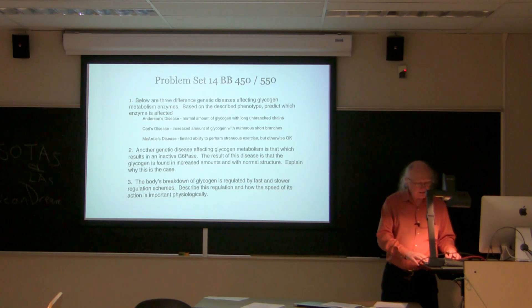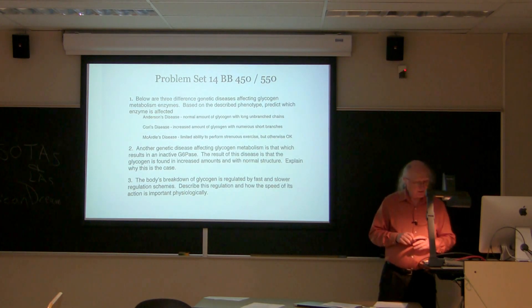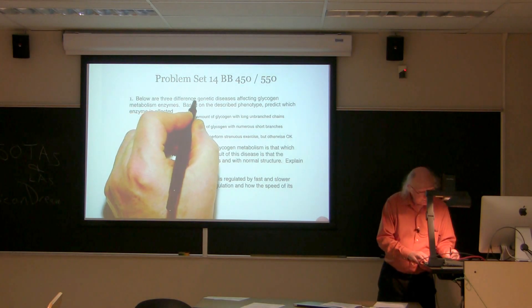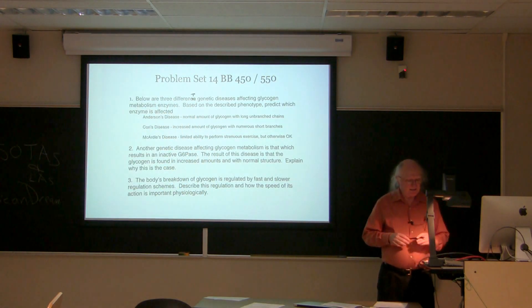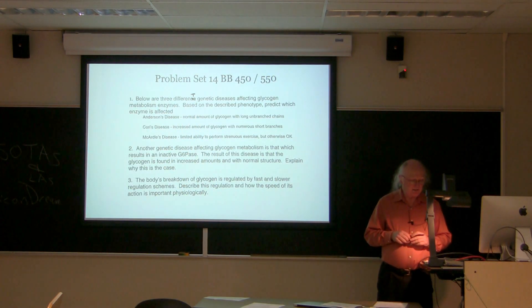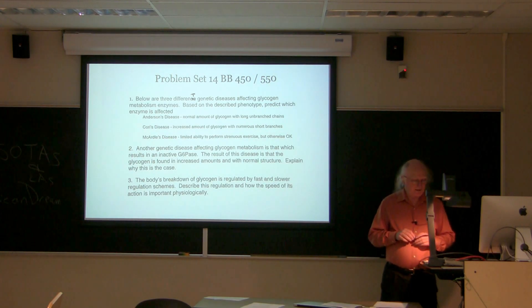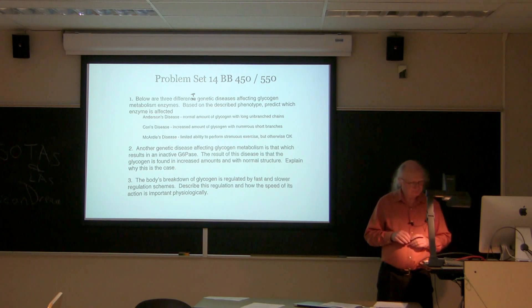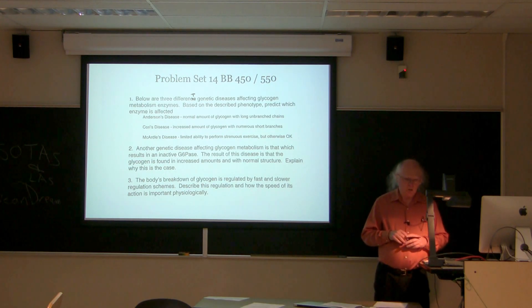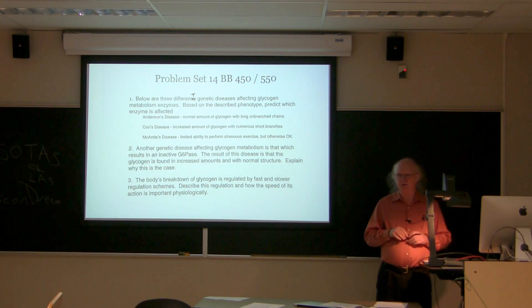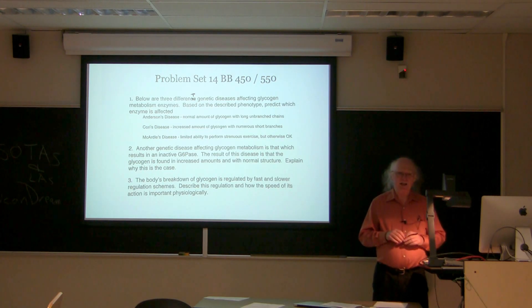The first question says that below are three different genetic diseases affecting glycogen metabolism enzymes. Based on the described phenotype, predict which enzyme is affected. The first is described as Anderson's disease, and Anderson's disease is a disease in which there's a normal amount of glycogen present with long unbranched chains.